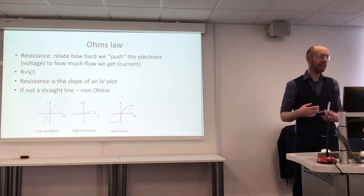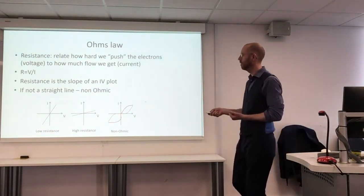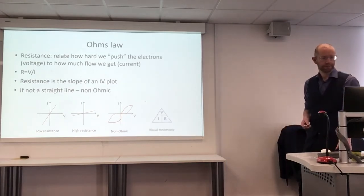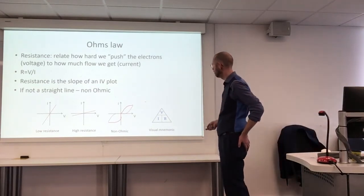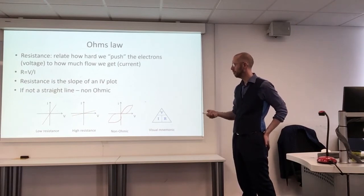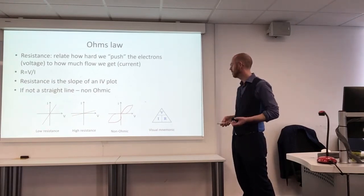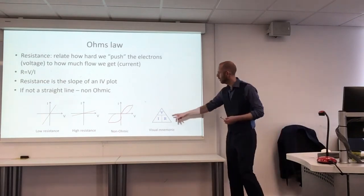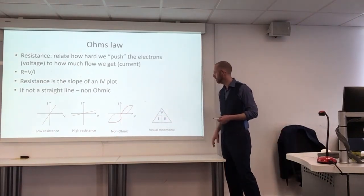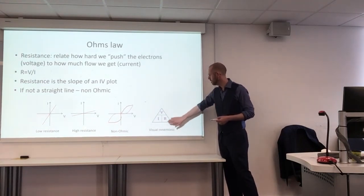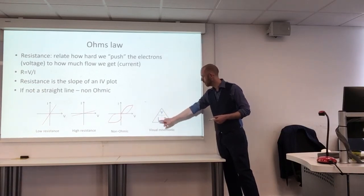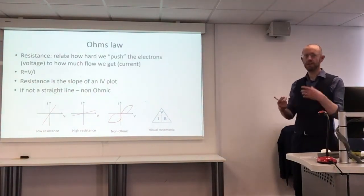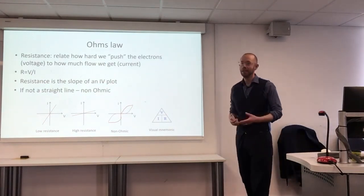For everything we're going to look at in this module, we're going to assume what we're looking at is Ohmic — it follows Ohm's law and we get a straight line on the IV plot. A nice visual mnemonic for remembering this and rearranging the equation: if you write V, I, and R in a triangle, then if you want voltage, that's current times resistance; if you want resistance, that's voltage divided by current; and if you want current, that's voltage divided by resistance. Or just remember R equals V over I and rearrange from there.